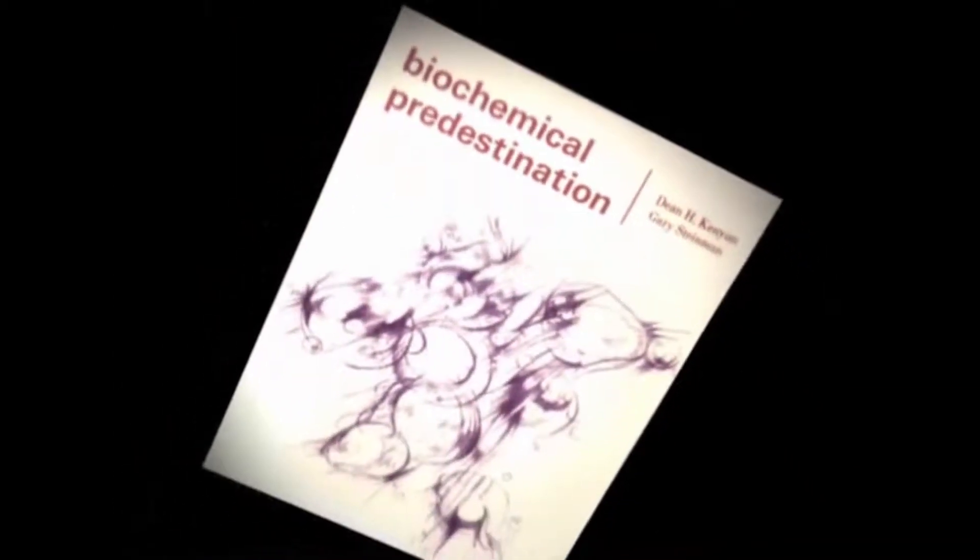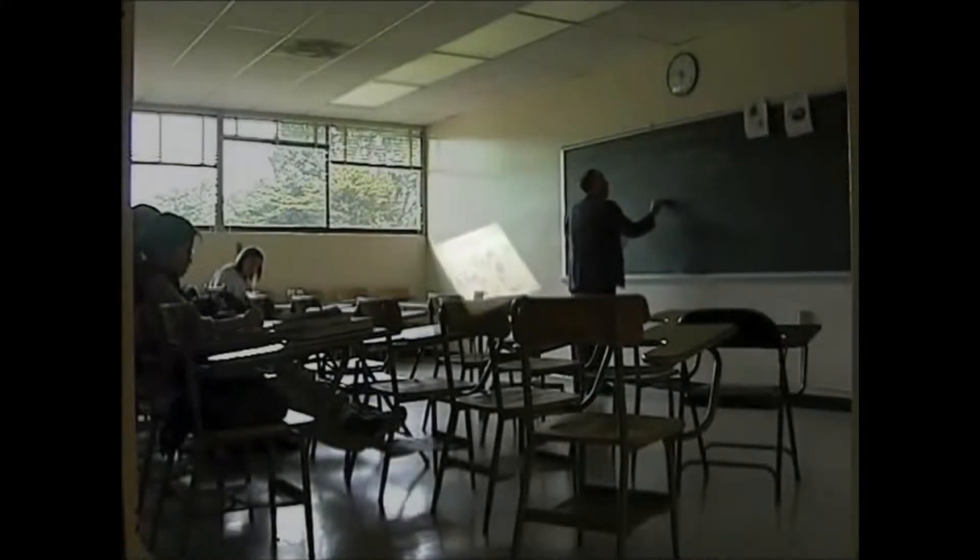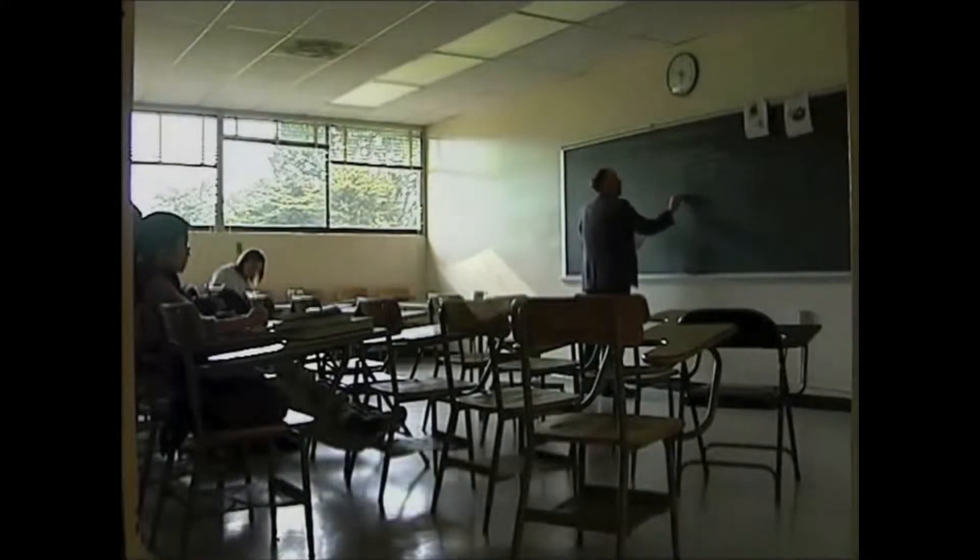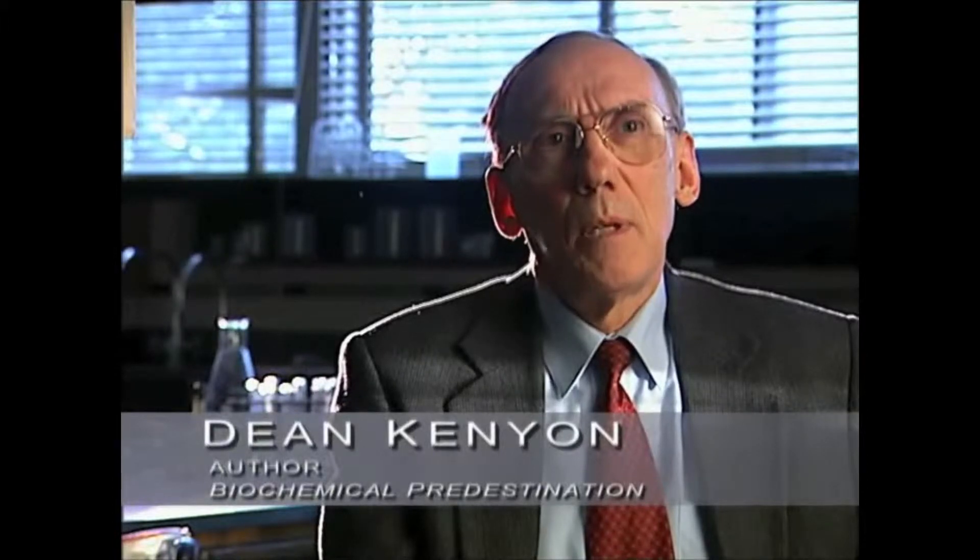Many scientists embraced Kenyon's ideas. Over the next 20 years, Biochemical Predestination became a best-selling text on the theory of chemical evolution. Yet, five years after the book's publication, Kenyon quietly began to doubt the plausibility of his own theory.